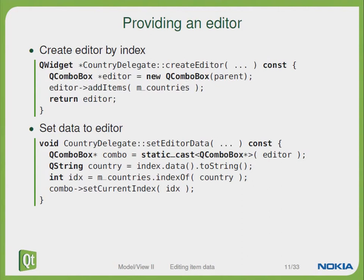Whenever the user wants to edit the country, we have to set the correct country string in our combo box. Therefore we have to set the correct editor data. First we get a pointer to our combo box and just set the correct index within it.